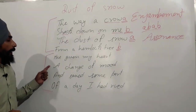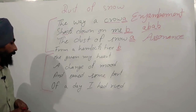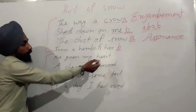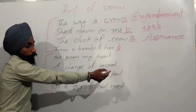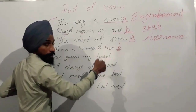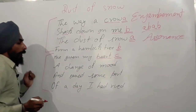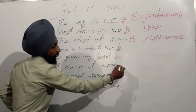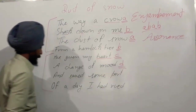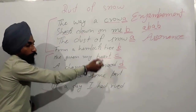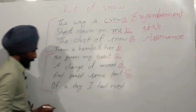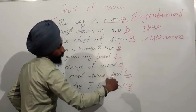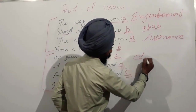For the second stanza: 'Has given my heart a change of mood, and saved some part of the day I had rued.' Heart does not rhyme with mood, so heart gets letter C and mood gets letter D. 'Saved some part' — part and heart rhyme, same letter C. 'Of a day I had rued' — rued and mood rhyme, letter D. So the second stanza's rhyme scheme is C, D, C, D.